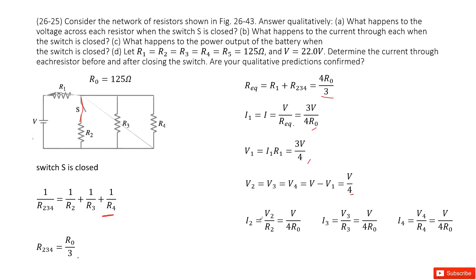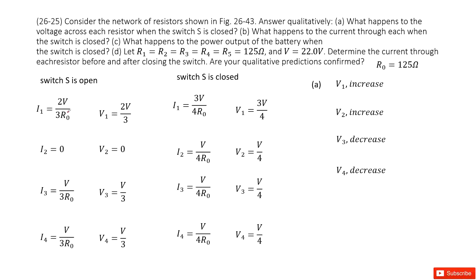Now we can get I2 as V2 over R2, I3 as V3 over R3, I4 as V4 over R4. Now we list all the quantities we just obtained from the previous work for switch is open and switch is closed.